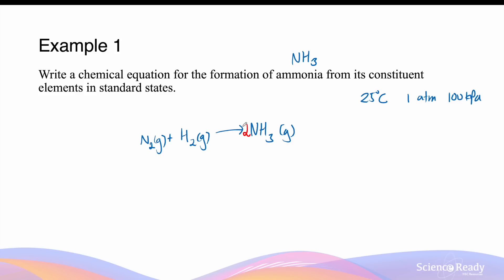This will change the number of hydrogen atoms on the right-hand side to 6, but we can easily balance this by multiplying the hydrogen gas on the reactant side by 3. So now we've got 2 nitrogens on both sides and 6 hydrogens on both sides.